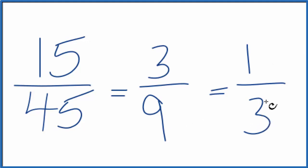So this is our fraction reduced to lowest terms for 15/45. All of these fractions are equivalent: 15/45, 3/9, and 1/3 all give the same decimal value.